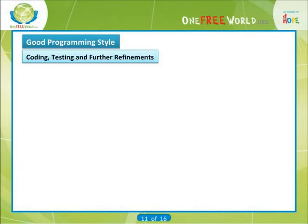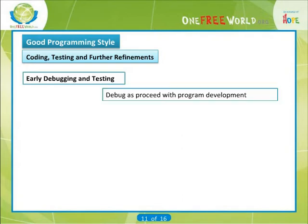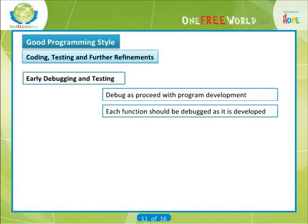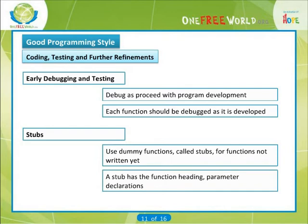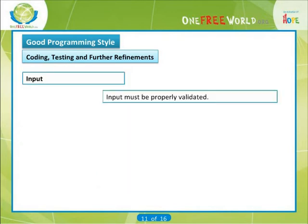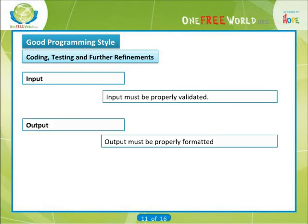Now let's look at coding, testing, and further refinements. Early debugging and testing: we should debug as we proceed with program development. Each function should be debugged as it is developed. Stubs: use dummy functions, called stubs, for functions not yet written. A stub has the function heading and parameter declarations. Input must be properly validated. Output must be properly formatted.